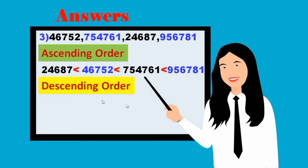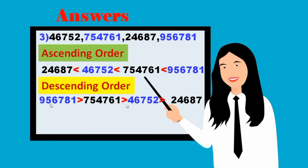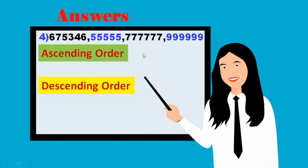Descending order means reverse. So: 9,56,781 is greater than 7,54,761 is greater than 46,752 is greater than 24,687. This is the third problem.